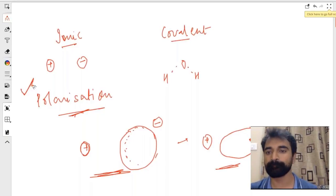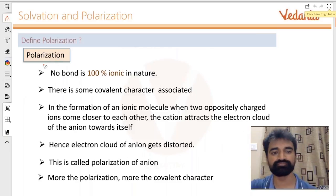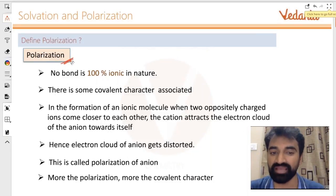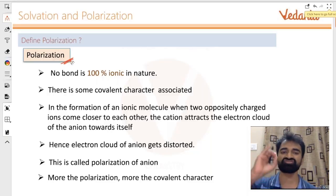No bond is 100% ionic in nature. There is always some covalent character associated to it. We'll discuss how to figure that out in a short while, but this is the most important part: there is always some covalent character associated.